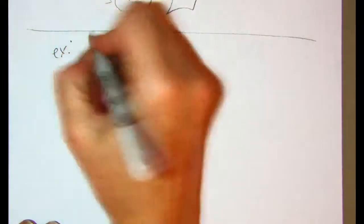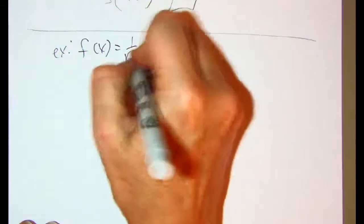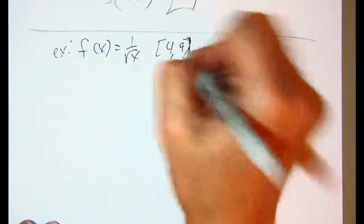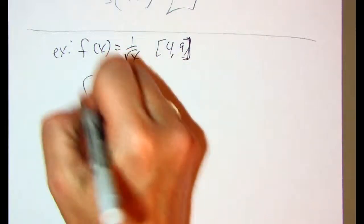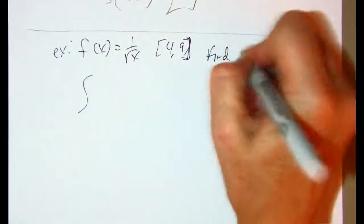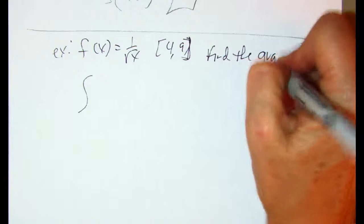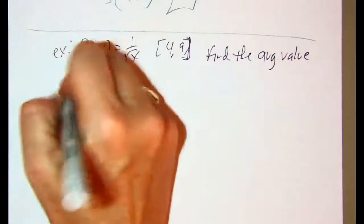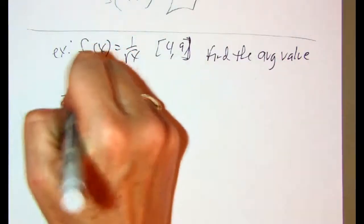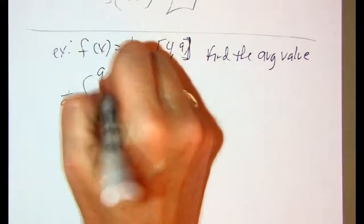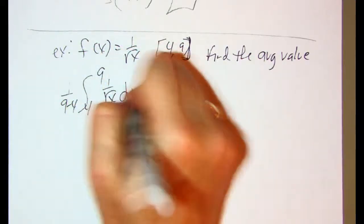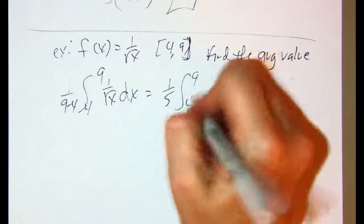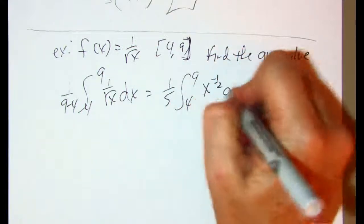That's another example. f of x. So here's my curve. Closed intervals from 4 to 9. So I want to find the average value. For the average value. So I know I do 1 over 9 minus 4. This is from 4 to 9. 1 over square root of x dx. I'm going to go ahead and clean that up. That's 1 fifth. Still from 9 to 4. And that would be x to the negative 1 half dx.